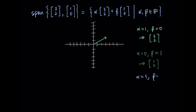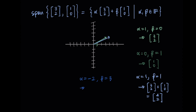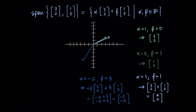Looking at more combinations: alpha=1, beta=1 gives [3,2] + [1,0] = [4,2], so we're finally reaching a new place. With alpha=-2 and beta=3, we get -2*[3,2] + 3*[1,0] = [-6+3, -4+0] = [-3,-4], a vector in the third quadrant. We could keep doing this for all sorts of alpha and beta, and any point on the x-y axes we can reach with some combination of these vectors.